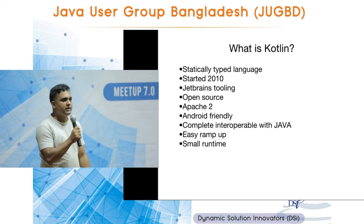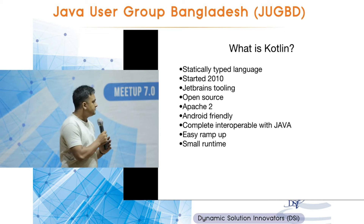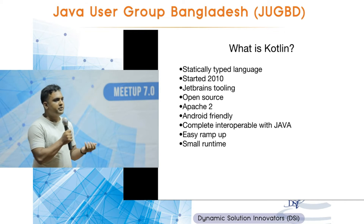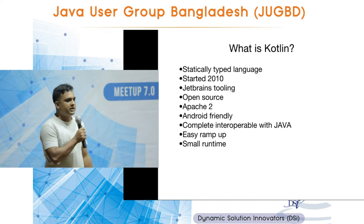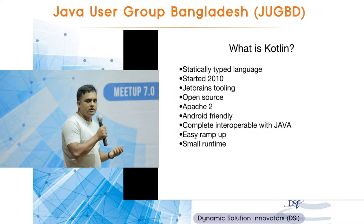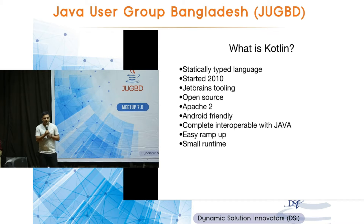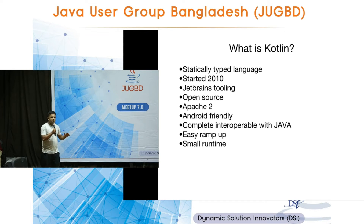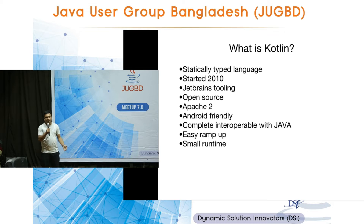Kotlin is Android-friendly in the sense that it targets the Java 6 runtime, so you can use it in Android applications without any third-party libraries. It is 100% interoperable with Java, meaning you can incrementally adopt it in your project — you can call methods from Kotlin to Java or Java to Kotlin. It has a very easy ramp-up time, the syntax is very similar to Java but more concise, and it has a very small runtime of less than one megabyte.